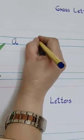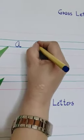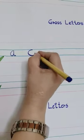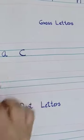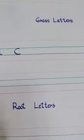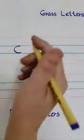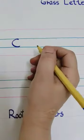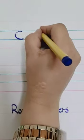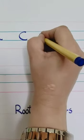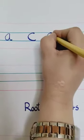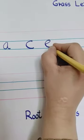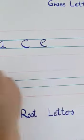C — yes, C is a grass letter because it comes in between the two lines. That's why it's called a grass letter. E is also a grass letter because it comes into the center two lines.